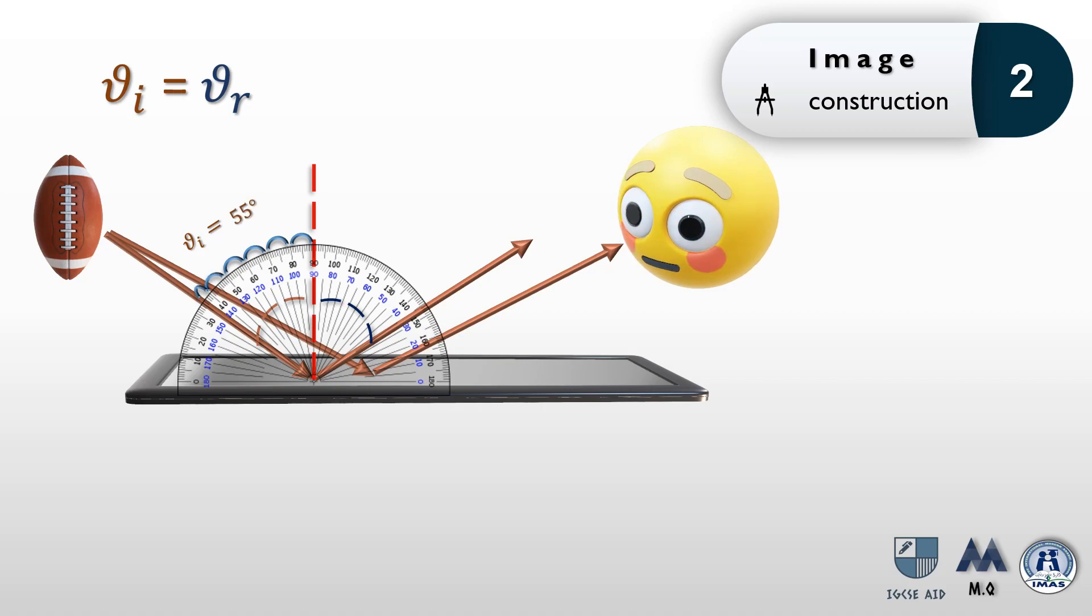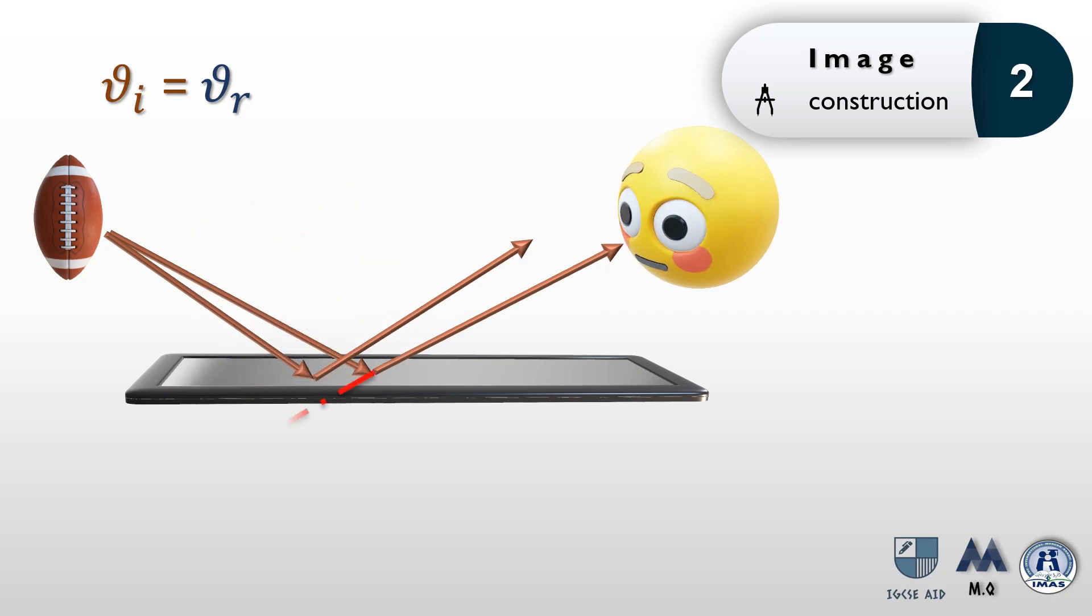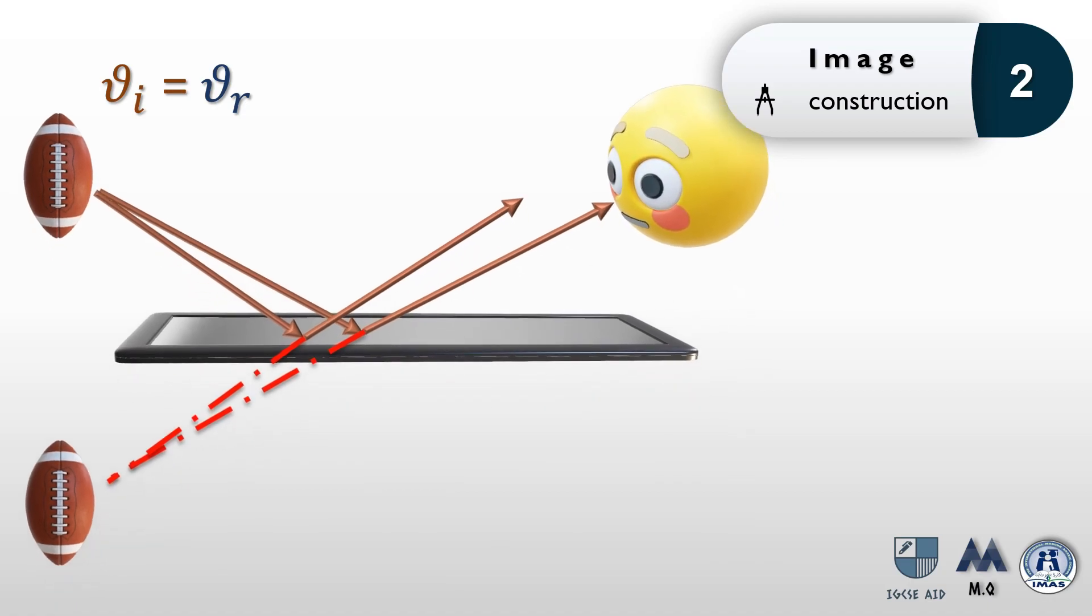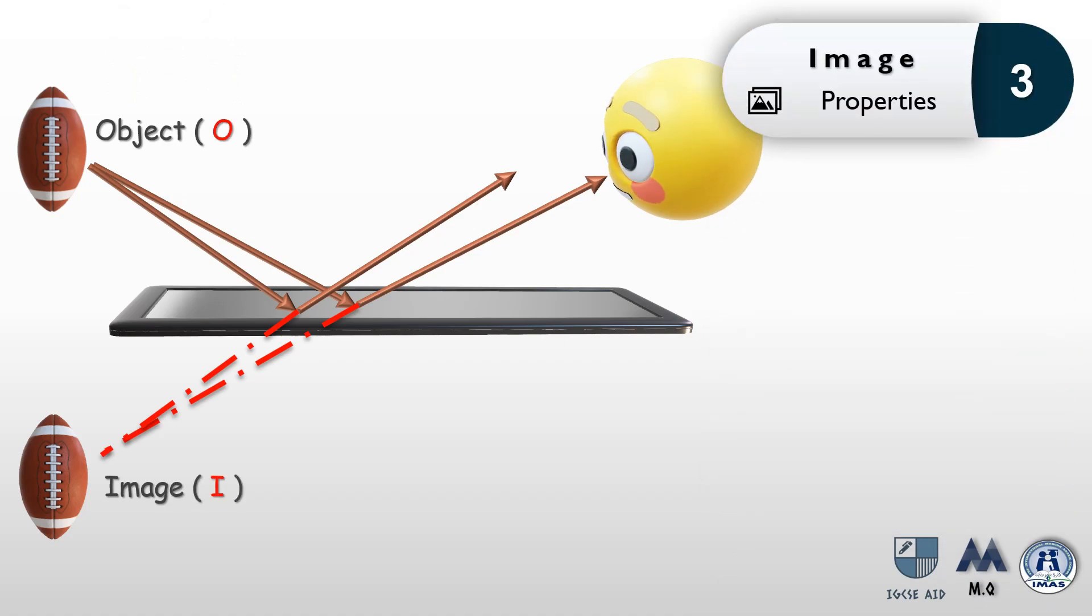To locate the image, you need to extend the reflected rays behind the mirror as shown. Note that for the extensions we use dashed lines, and the intersection between the extended lines is the location and position of the image. To be more specific, it's exactly the image of the point where you started to draw your incident rays.